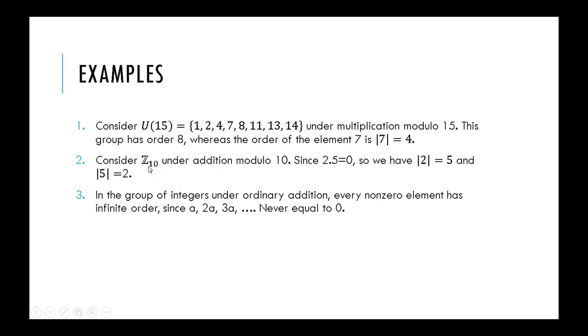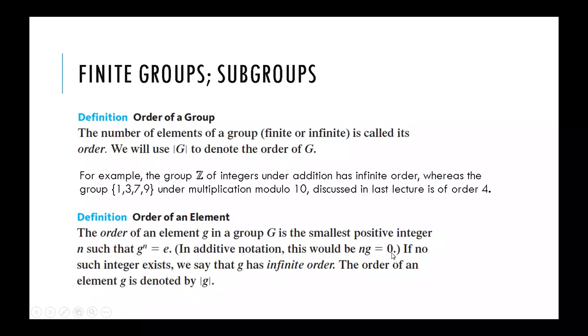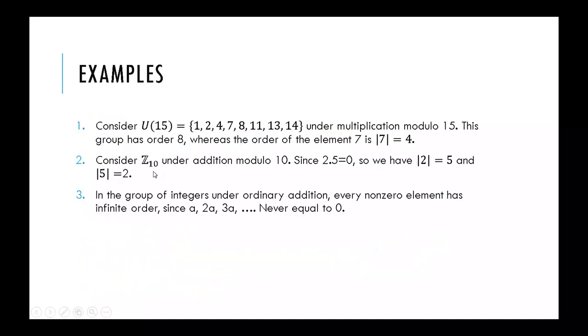Consider this group under addition Z10. Since this is an additive group, we will consider the notation ng = 0 instead of g^n = e. When I take an element 2, then how many times I add 2 with itself to get the identity of this group, that is 0. If I add 2 with itself 5 times, then I get 0, because 2 times 5 is 10, and under modulo 10 the remainder is 0. So the order of element 2 will be 5. And similarly, the order of element 5 will be 2, because 5 when added 2 times will give me 0.